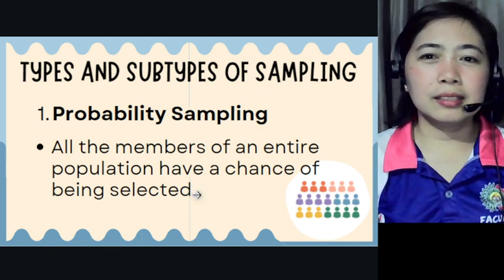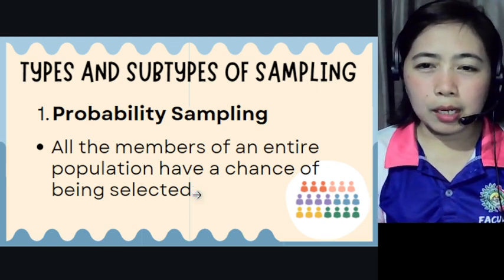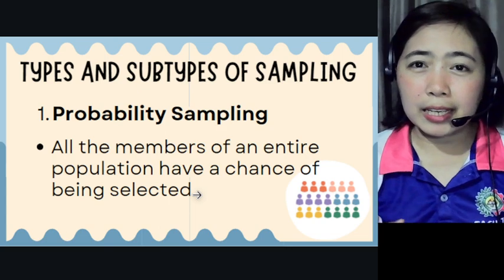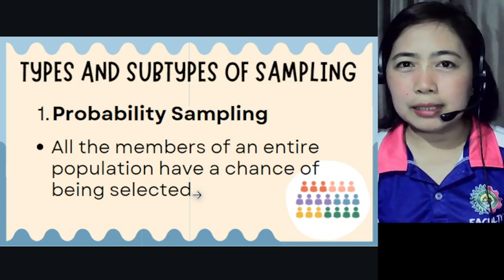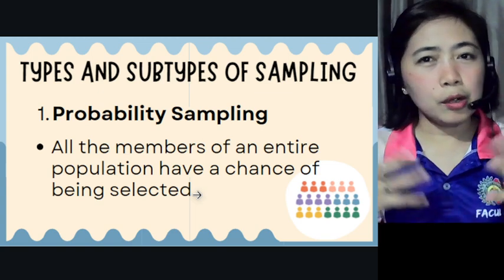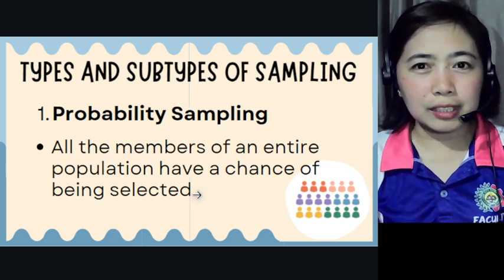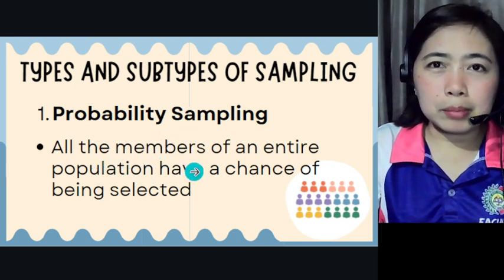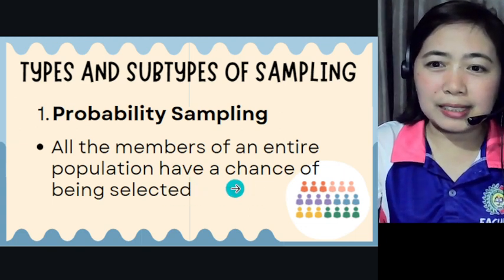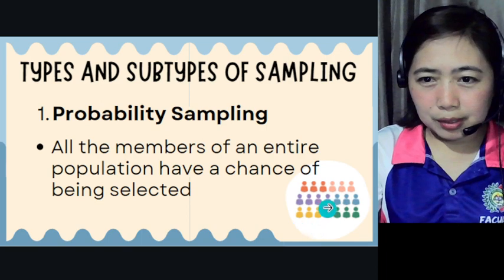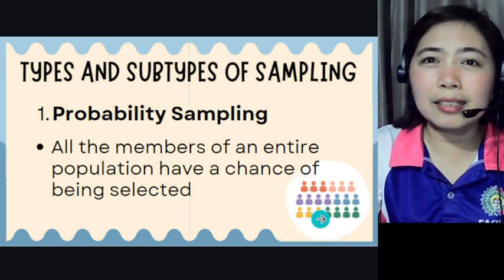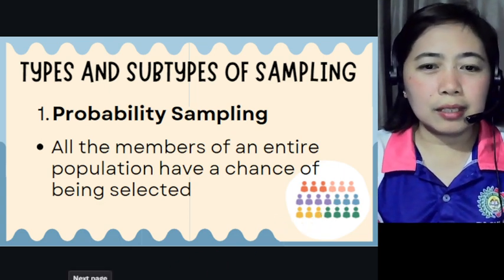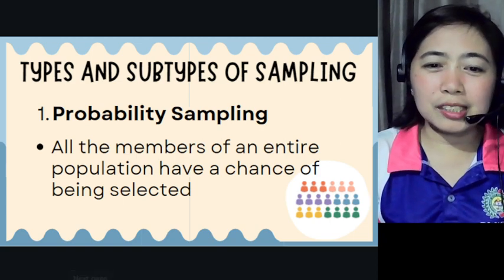We will now discuss the two types and subtypes of sampling. There are two types: probability sampling and non-probability sampling. For probability sampling, there are three or four subtypes. Probability sampling means all members of an entire population have a chance of being selected — any PWD in Mandawi City, for example. Everyone has an equal chance.